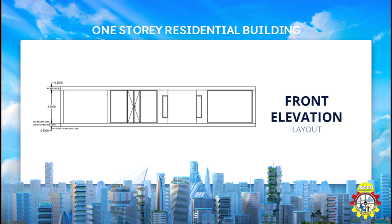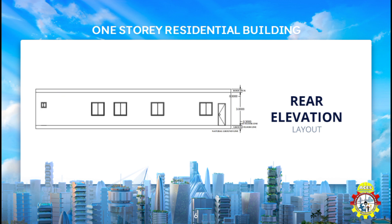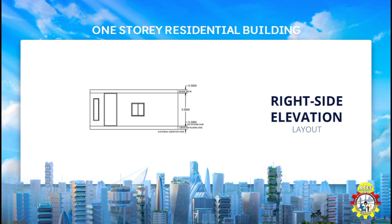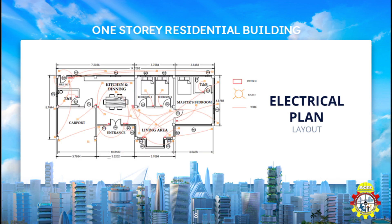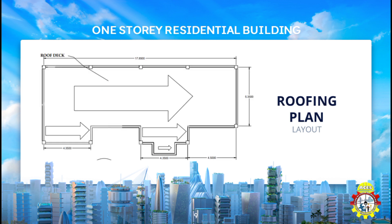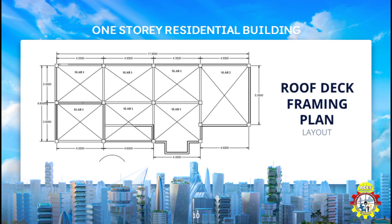Three is our front elevation layout. Four is our rear elevation layout. Five is our right side elevation layout. Six is our electrical plan layout. Seven is our roofing plan layout. Eight is our roof deck framing layout.